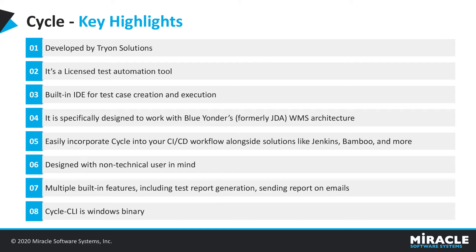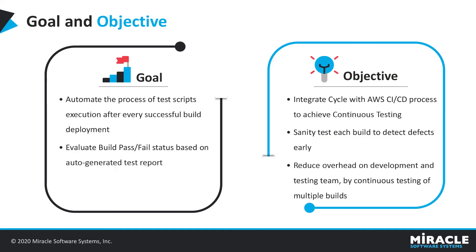Goals and objectives: the goal for today is to automate the process of script execution after every successful build deployment, and to evaluate build pass or fail status based on the auto-generated test report. The objectives are to integrate Cycle with the AWS CI/CD process to achieve continuous testing, sanity test each build to detect defects early, and reduce overhead on development and testing teams by continuously testing multiple builds.